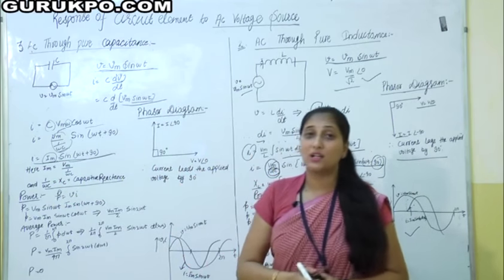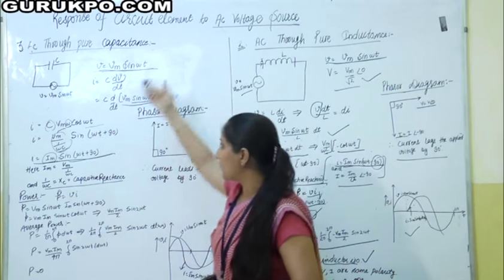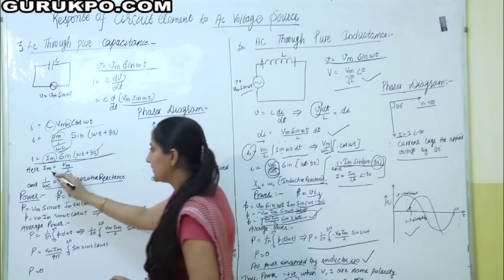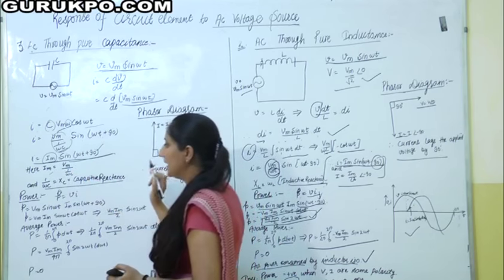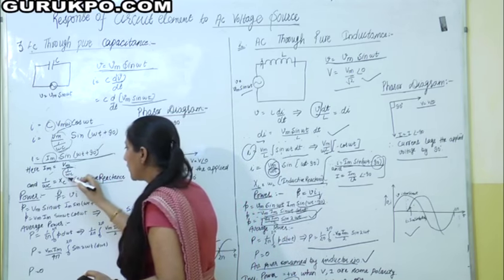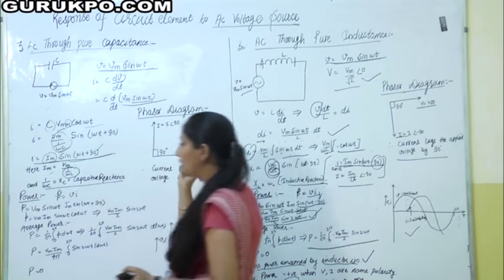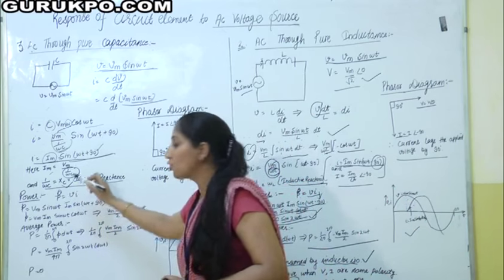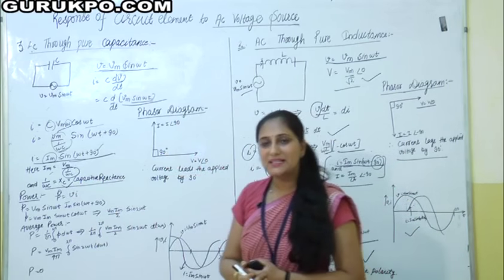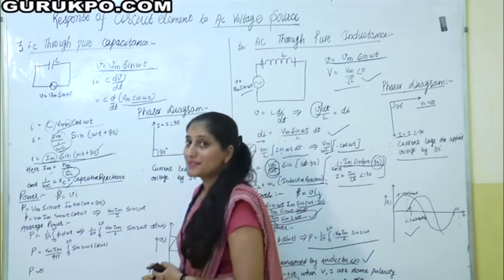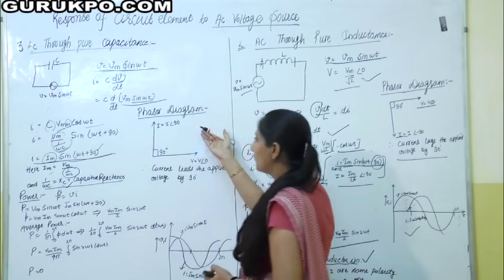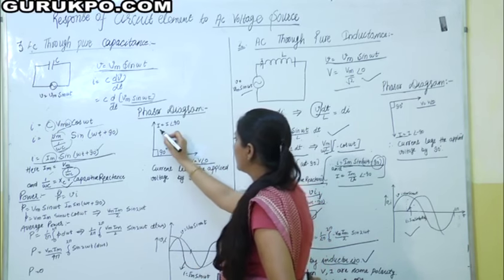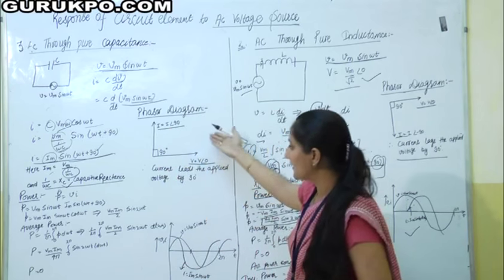Comparing this with the voltage equation, we can see that the current leads the voltage by an angle of 90°. The term Im = Vm / (1/ωC), and the term 1/ωC is called capacitive reactance, denoted Xc. So Xc = 1/ωC. In the phasor diagram of the capacitor, the current leads the voltage by 90°.